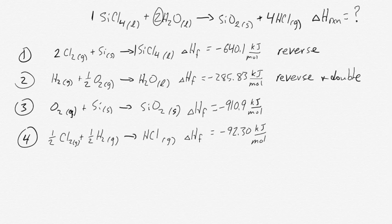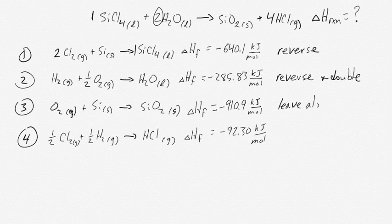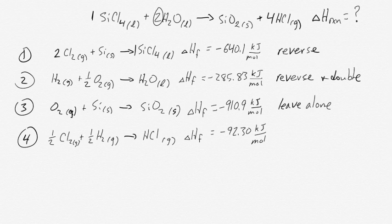When we look at our third equation, we look for SiO2. In our individual equation it shows up as a product, and in our overall equation it also shows up as a product, and in both cases there is only one mole, so we just leave that one alone. Then we look at our fourth equation for HCl. It's a product in the individual equation, and it's a product in the overall equation as well. But there are four in our overall equation and only one in our individual, so we have to quadruple equation number four — multiply it all by four.